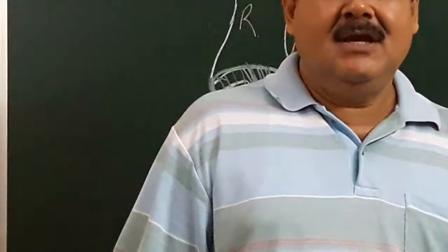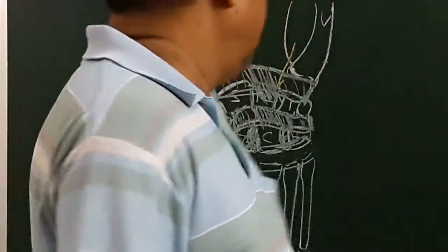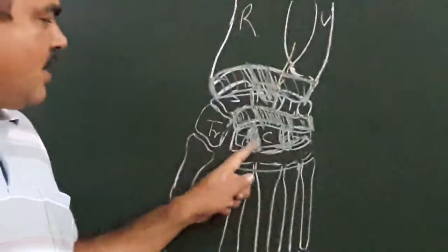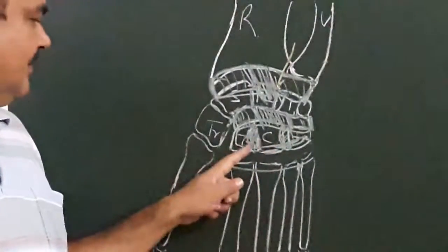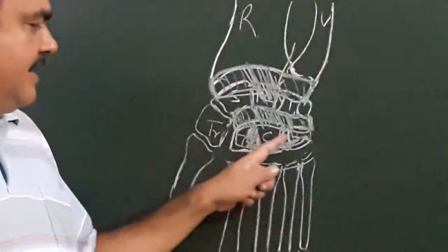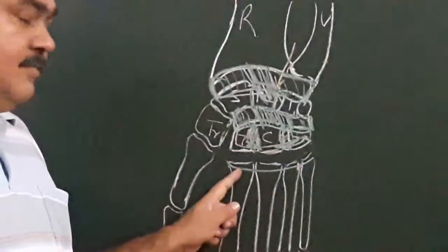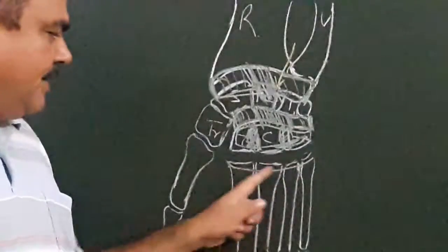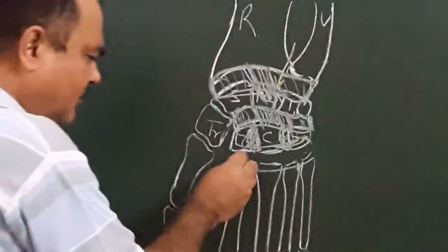Now we will discuss the carpo-metacarpal joint. Here is the distal row of the carpal bone: trapezoid, capitate, hamate, and these are the medial four metacarpals. These are articular surfaces.